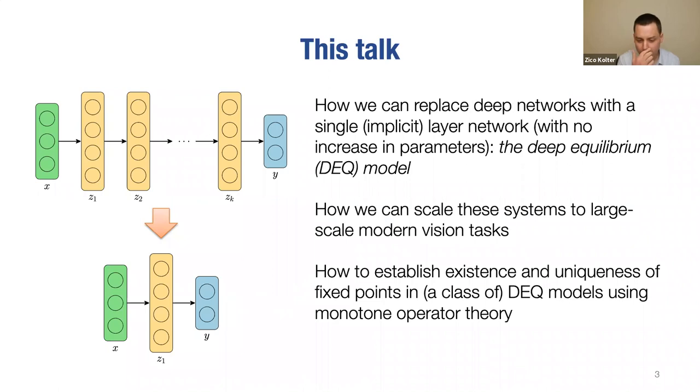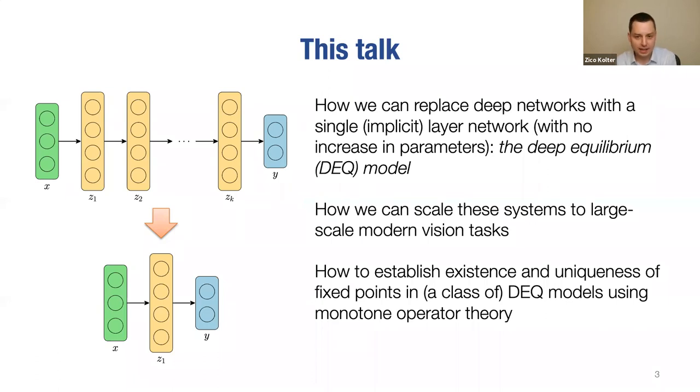Obviously these pictures are coming out of networks, but I want to argue this is not quite the full story of depth. I want to present a different perspective on what depth really means in networks and hopefully convince you there are a lot of things you can do with a very different kind of approach and understanding of how deep networks actually work. This talk is going to be about how we can replace deep networks with a single implicit layer.